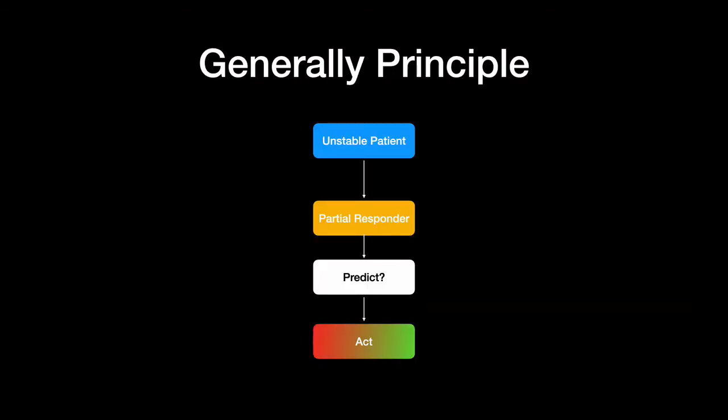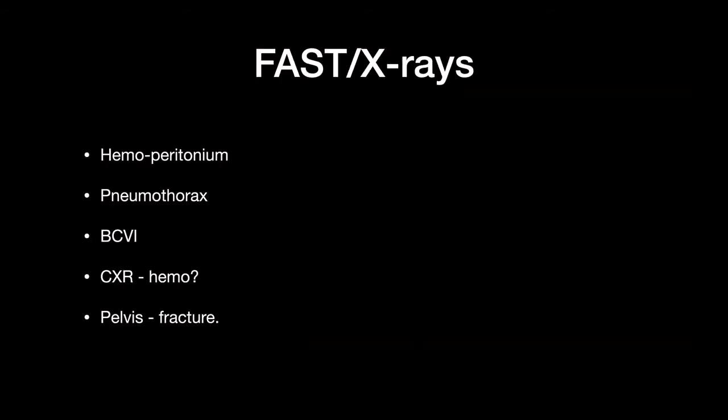It's the same general principles: you're trying to figure out whether you can act like it's a complete responder — disposition, diagnosis, get other specialties involved — or act like it's a dying patient you caught early enough, who is now going to deteriorate and requires early intervention. Your FAST and X-rays will tell you about any clinically significant hemoperitoneum, pneumothoraxes, blunt cardiac injury, especially with pericardial fluid, and pelvic fractures. It also tells you what to act on before you leave for the CT scanner.